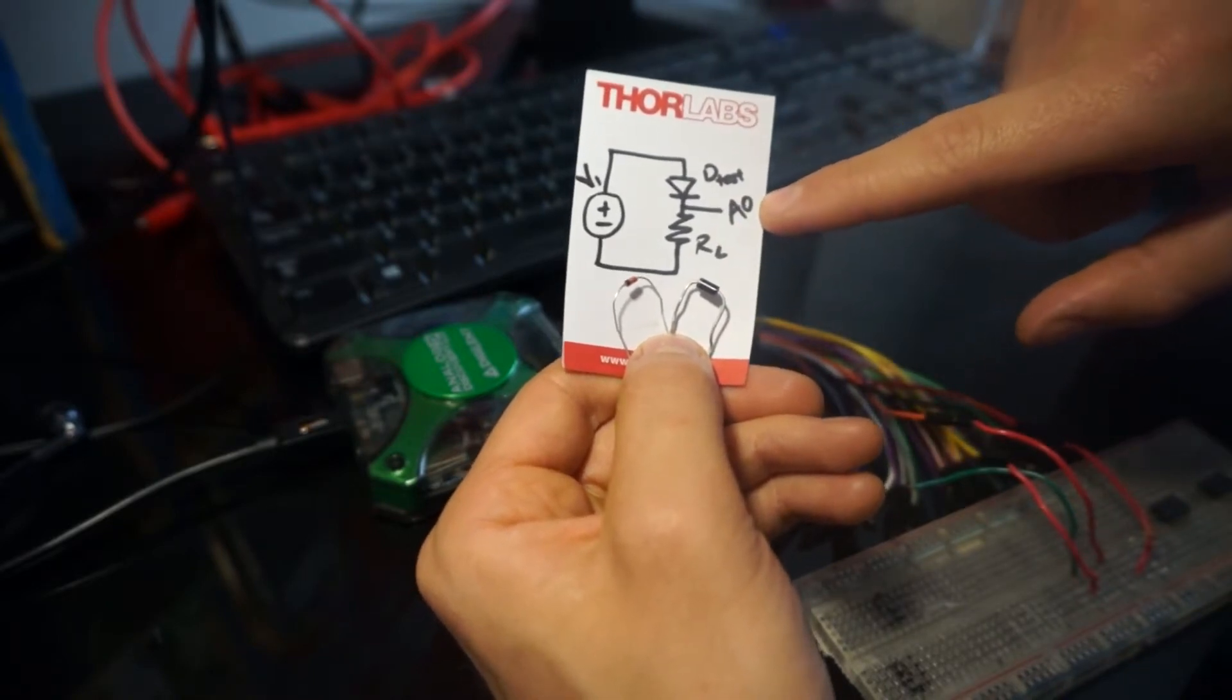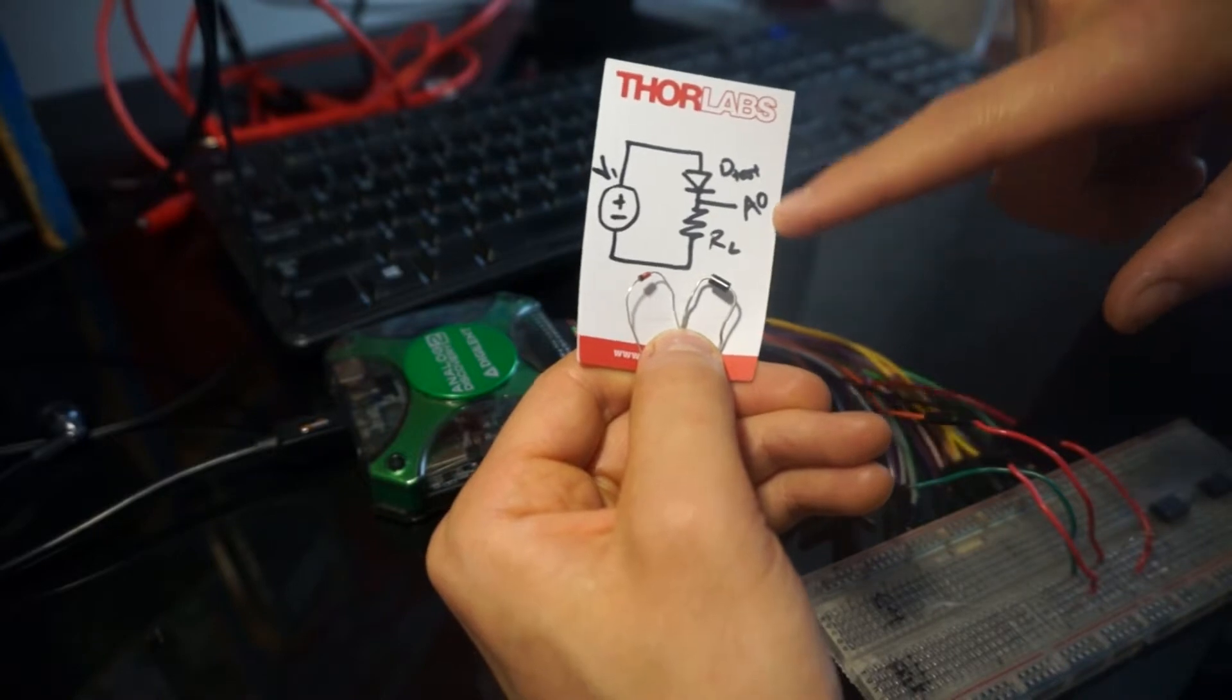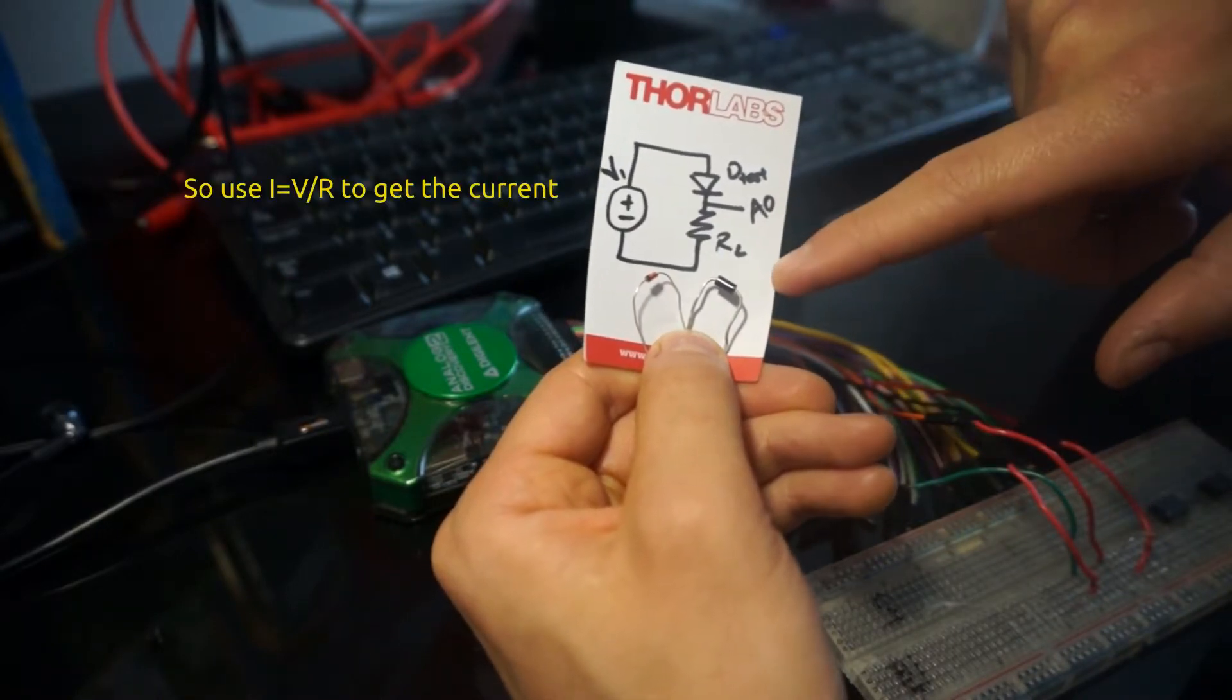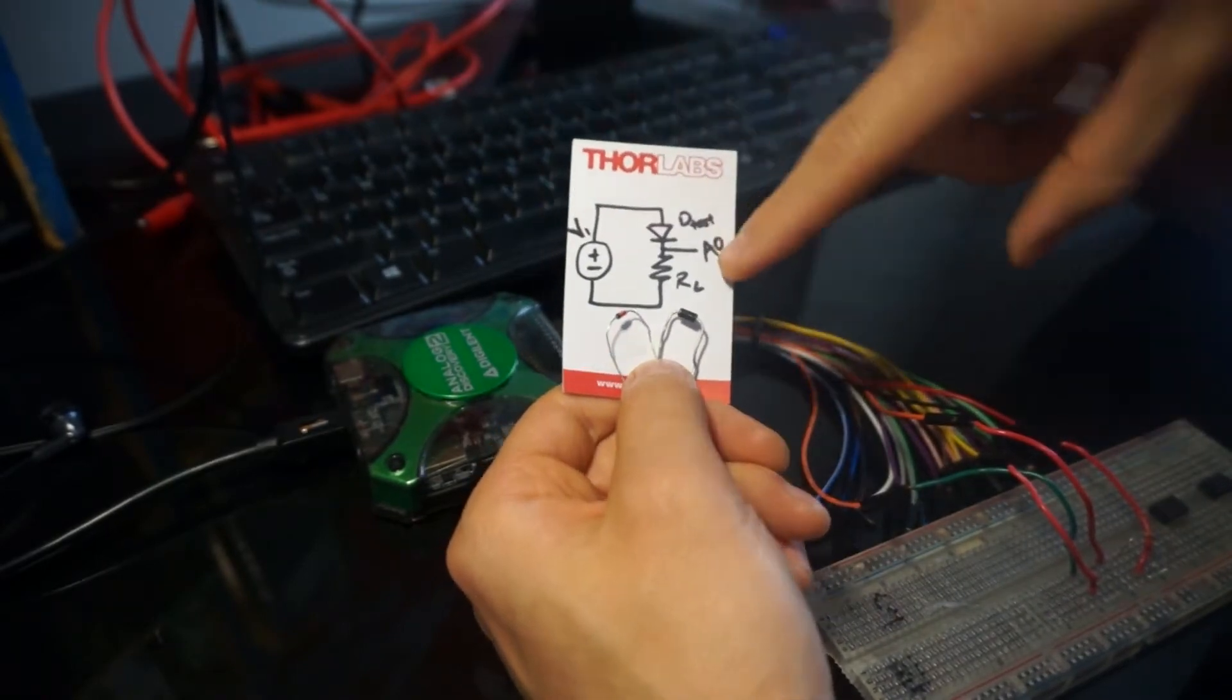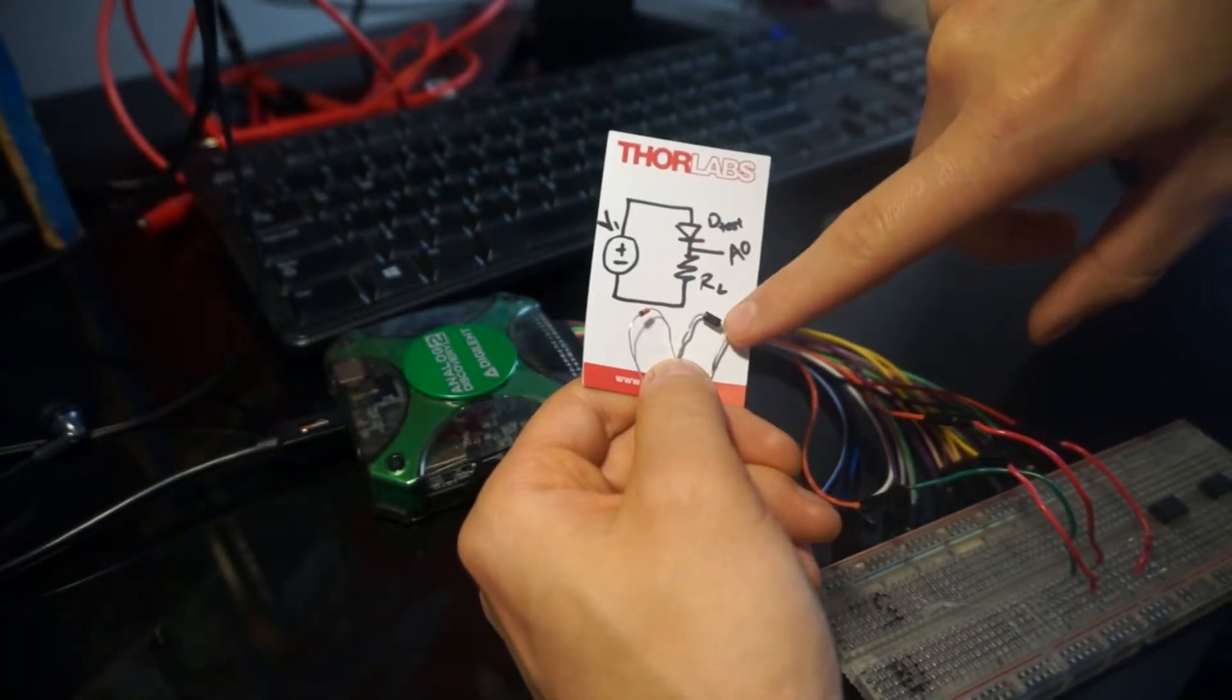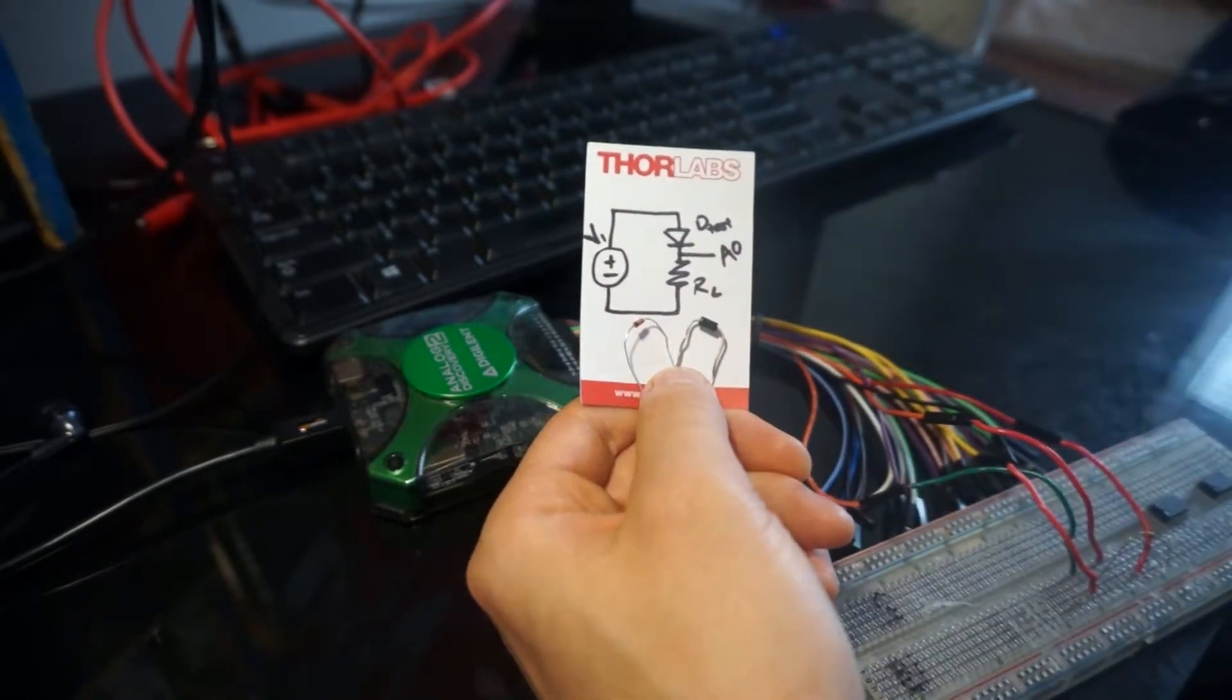And then to get the current, we'll take the voltage across the resistor, which is also at that measurement point. And of course, the other side is the ground. So, we have the voltage across it, and we know the resistance value because we can just measure that. And then all we're going to do is switch out a couple different diodes, these two different guys right here, and look at their curves.